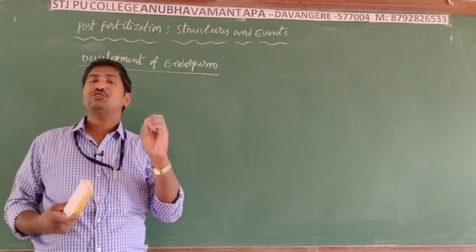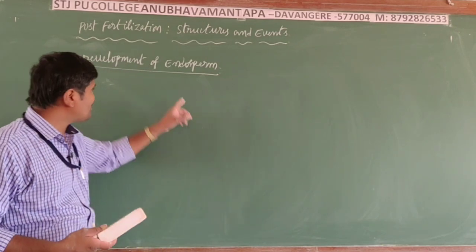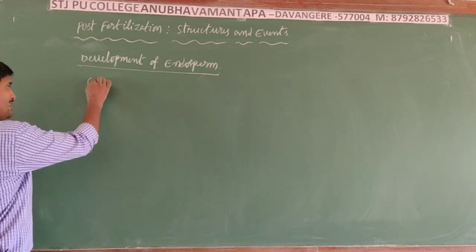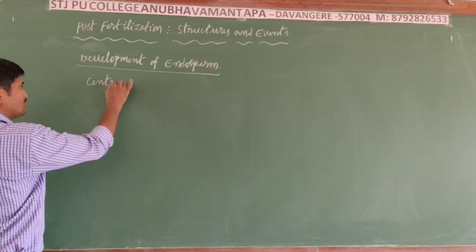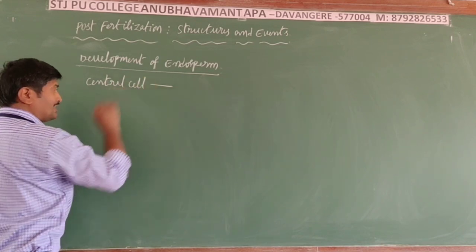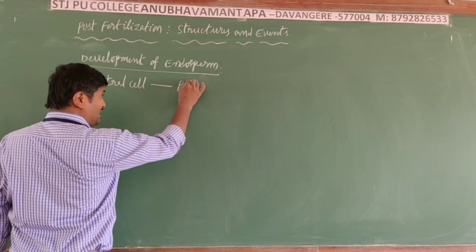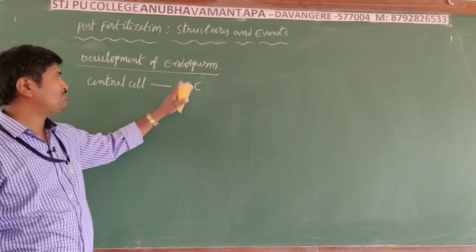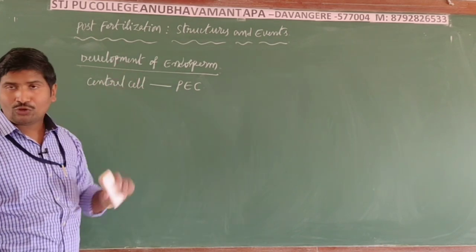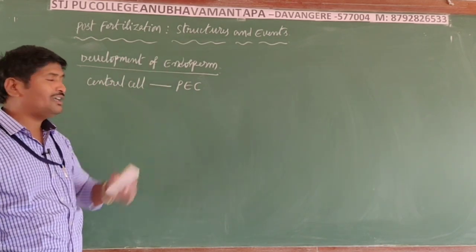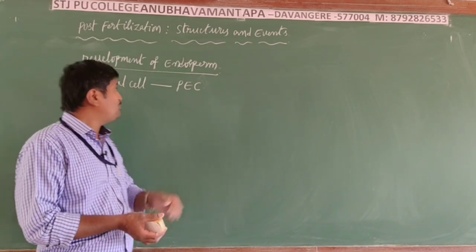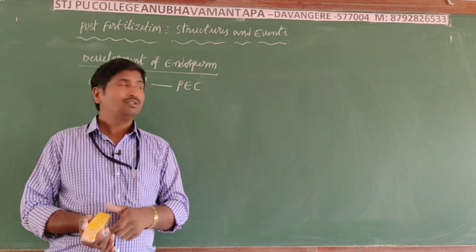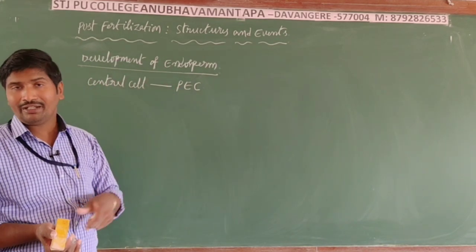The endosperm stores food material; that is why it is a nutrient tissue, developed from the central cell. The central cell is developed into the primary endosperm cell (PEC), which stores food material and supplies it to the developing embryo.